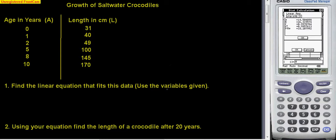We are told to use the variables given. That means we should not use x and y like the calculator has, but we should use L and A like the question gives. So our answer this time will be that L equals, whatever our a is, and it is 14.5.